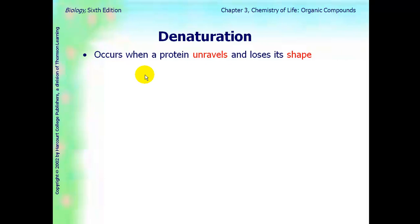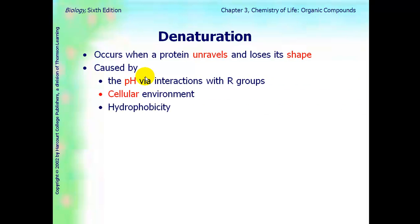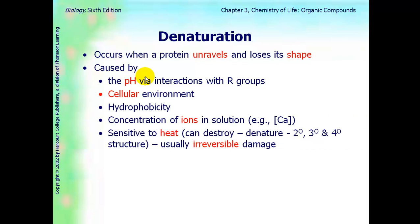The last concept is denaturation, and this occurs when a protein unravels and loses its shape. It can be caused by pH changes, cellular environment, hydrophobic environments, concentration of ions in the solution, and heat. For heat, it usually can destroy it at the secondary, tertiary, and quaternary structures. And in heat, it's usually irreversible damage. So that's why having a high fever is very dangerous. Mutations also can damage the function of a protein, such as sickle cell, that causes sickle cell anemia, because that's affecting the hemoglobin, the shape of the hemoglobin.